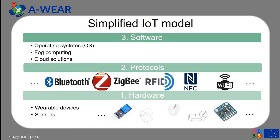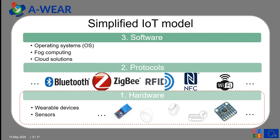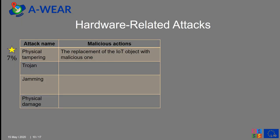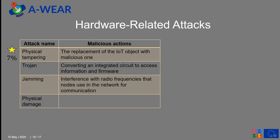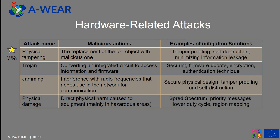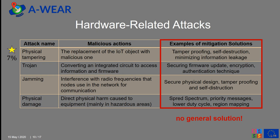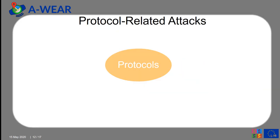Let's take a look at hardware-related attacks. The most widespread in this group is physical tampering, which means the replacement of an IoT object with a malicious one. Secondly, Trojan — converting an integrated circuit to access information and firmware. Then jamming — interference with radio frequencies that nodes use in the network for communication. And finally, physical damage — direct physical harm caused to equipment. If we look at examples of mitigation solutions, we notice there is no single solution that applies to all.